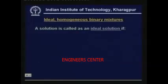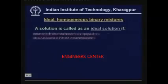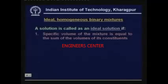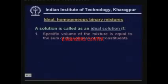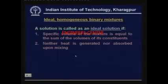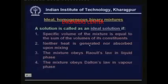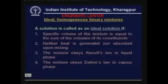Let us define what is known as an ideal homogeneous binary mixture. A solution is called ideal if the specific volume of the mixture equals the sum of the volumes of its constituents. During mixing, neither heat is generated nor absorbed. The mixture obeys Raoult's law in the liquid phase and Dalton's law in the vapor phase. These are the four conditions based on which you can say whether a solution behaves as an ideal solution or not. These conditions are related to each other.